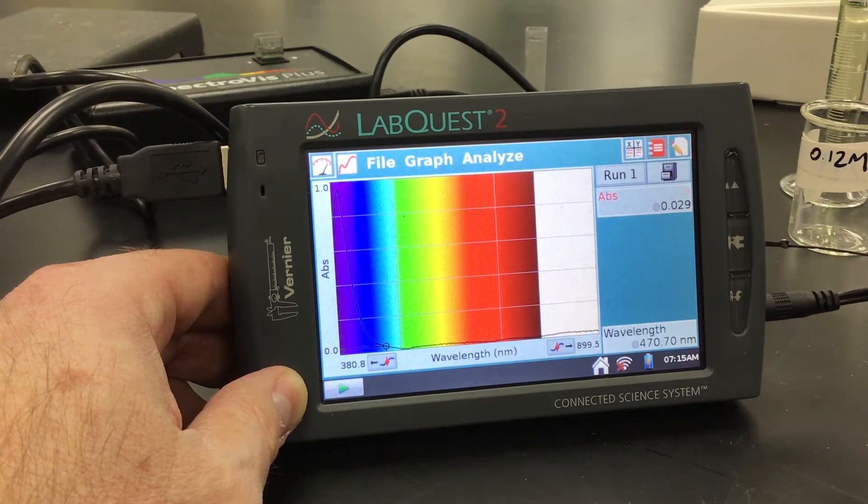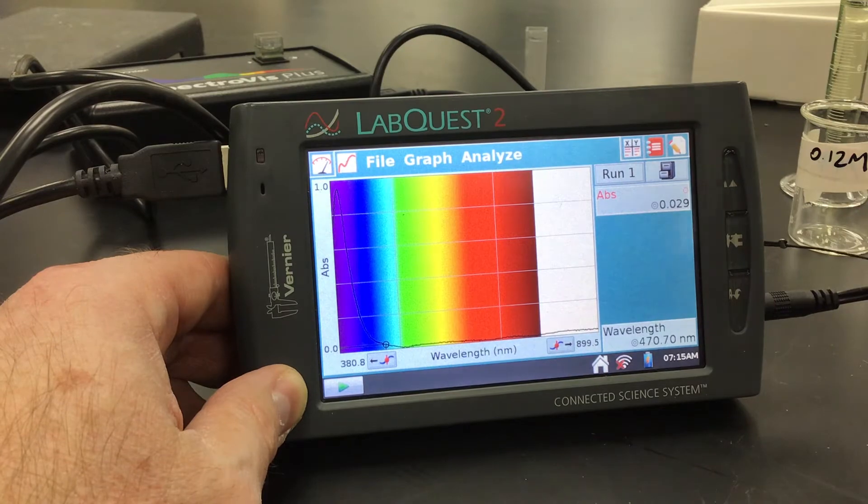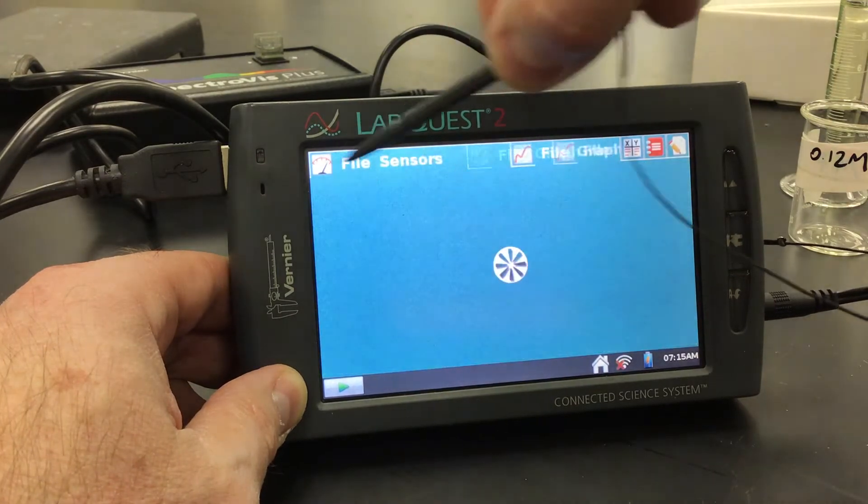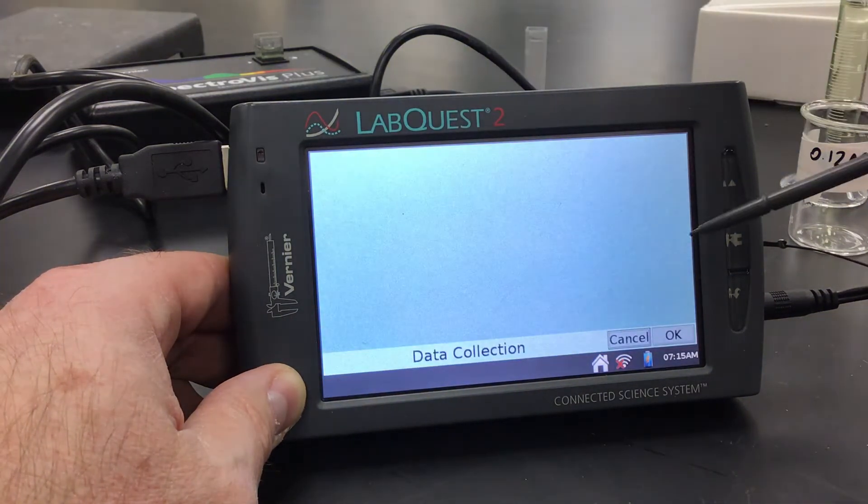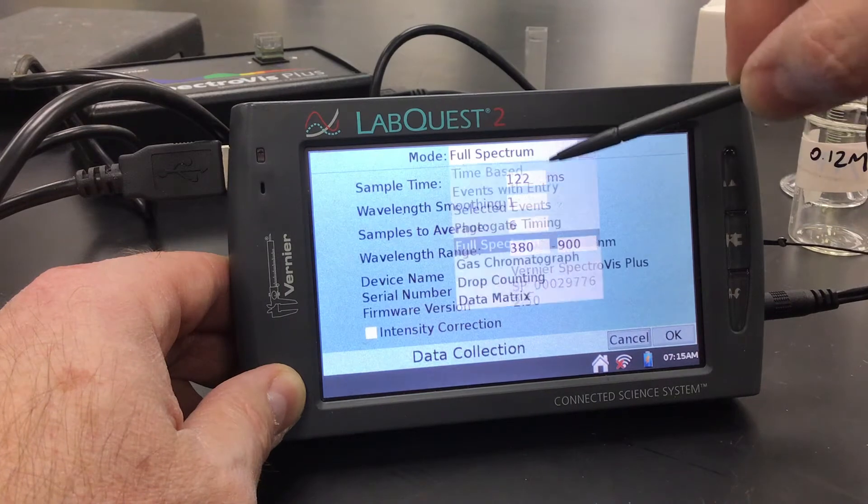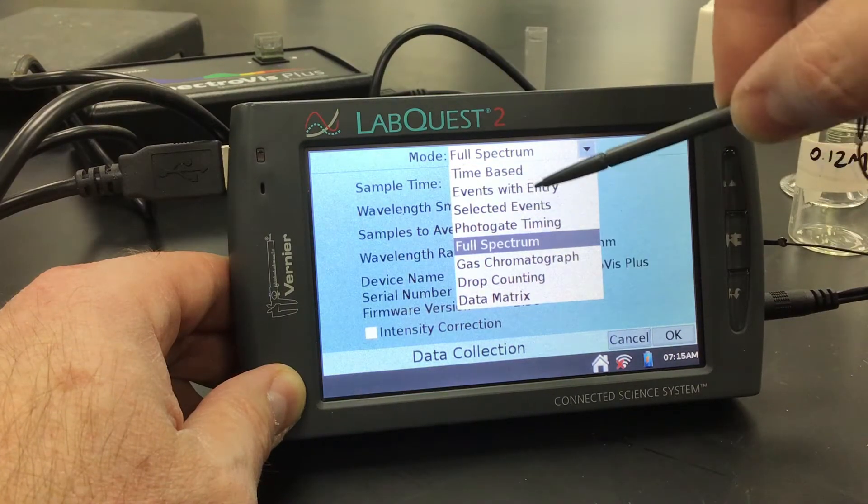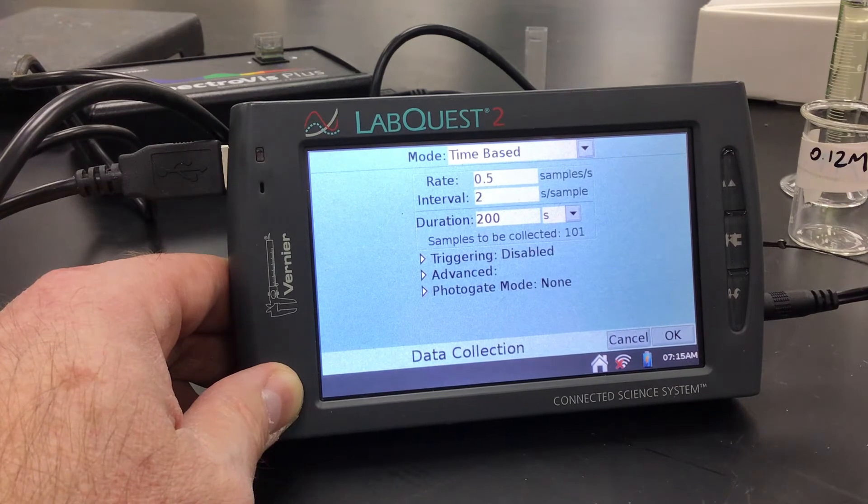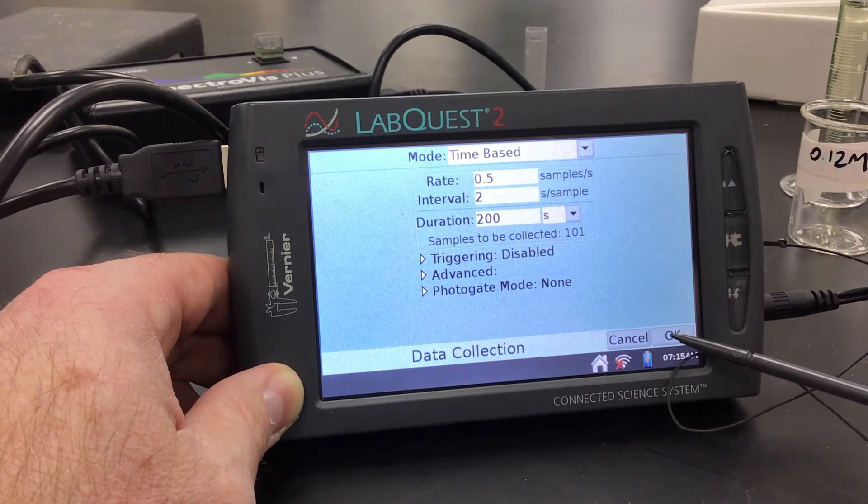Once we can do that, we're going to go up in the top left into the meter and we're going to change the mode to time-based. And then our time-based, we're going to collect it at 200 seconds, which is the default. All the other settings look good, so I'm going to hit OK.